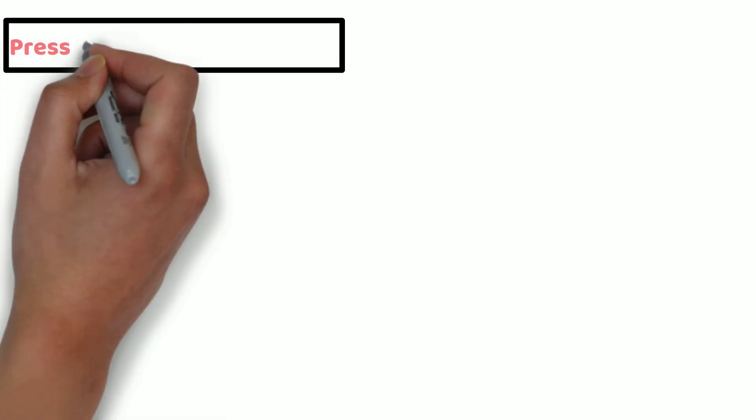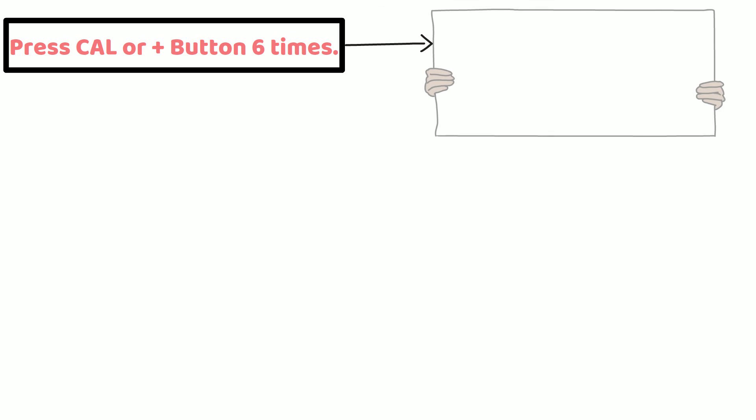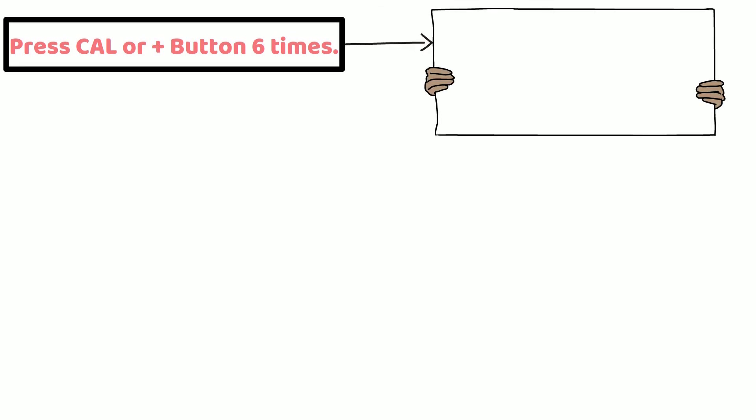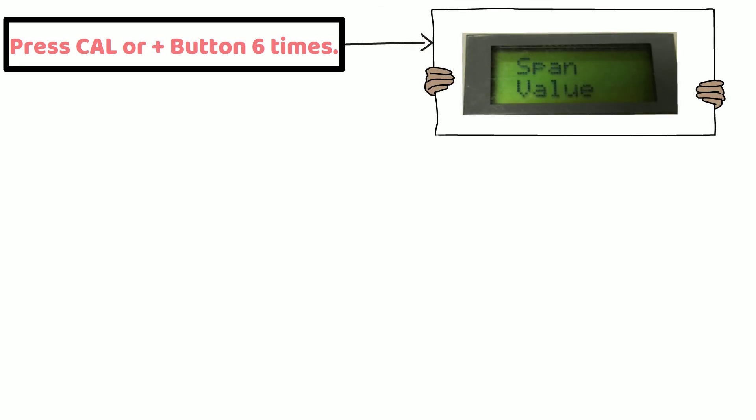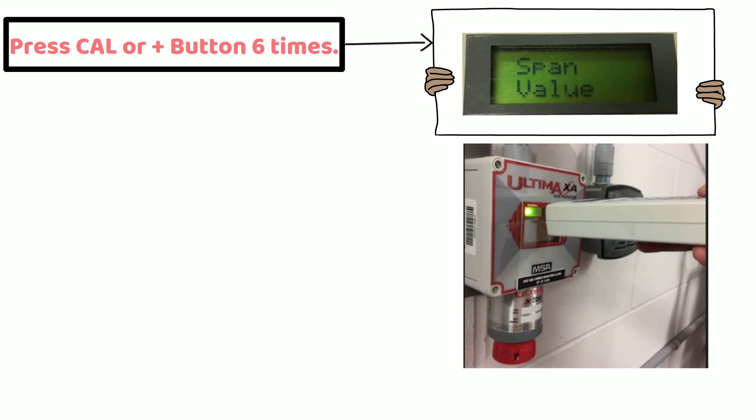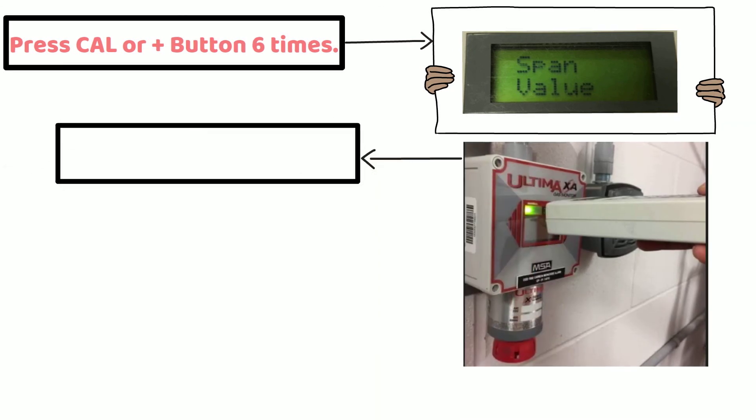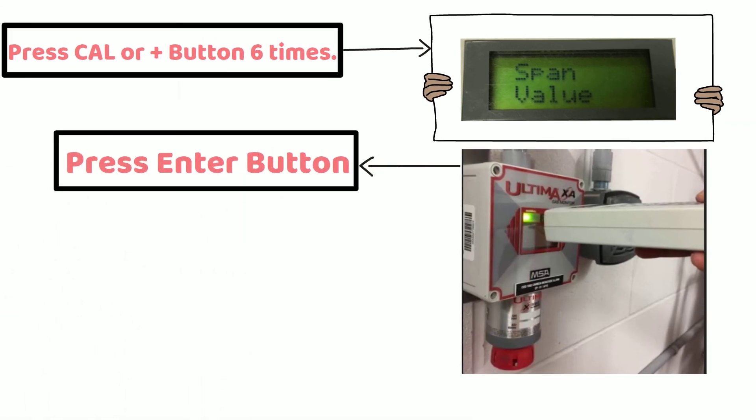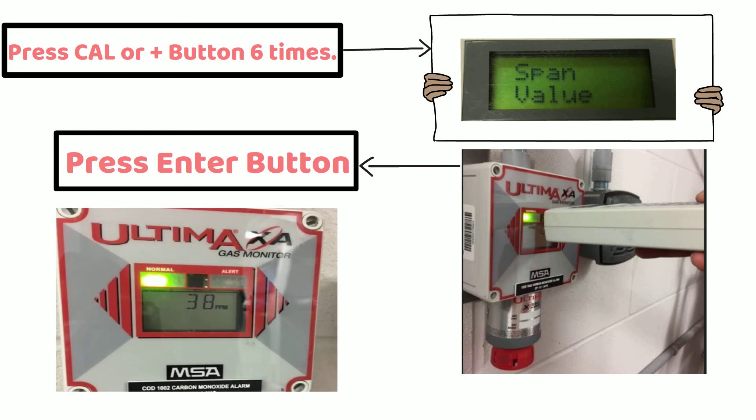For example, if I want to check span value, I will press cal or plus button six times. When you see span on controller display, point controller towards transmitter and press enter button. Span value will appear on transmitter display for three seconds. Note down span value since you need to use same concentration gas to calibrate the transmitter.